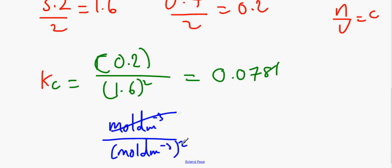Obviously you can get rid of one of those and one of those, leaving us with mole to the minus 1 decimeter cubed, or decimeter cubed mole to the minus 1. And that's the answer.